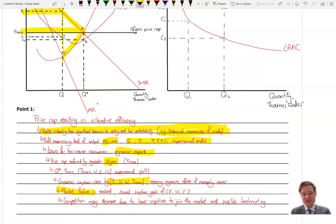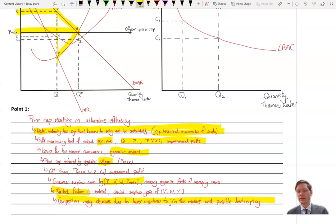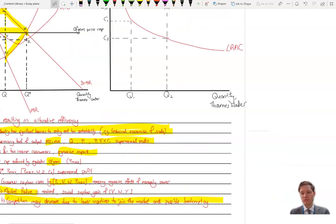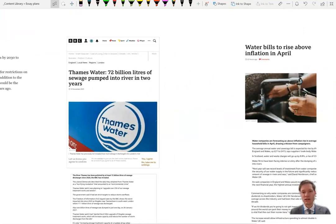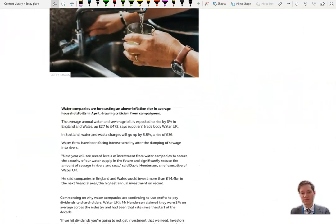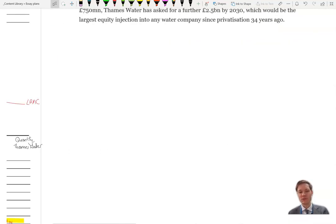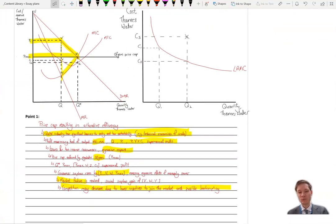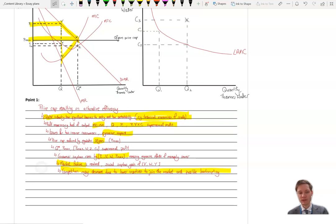You may say, though, that competition might actually decrease due to lower incentives to join the market. So it could impact on contestability. But that's an extra point which may or may not be useful there. You may refer to some of these articles here as well. And we certainly see that water bills are going up. But we can see that the water companies are being given the ability to raise their price cap with inflation and perhaps above inflation.